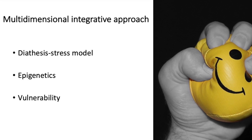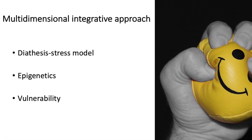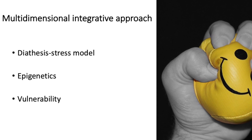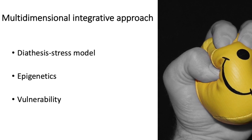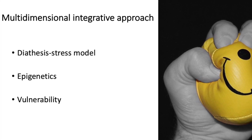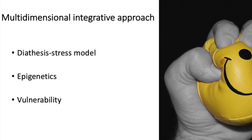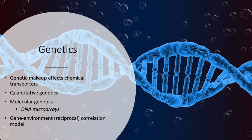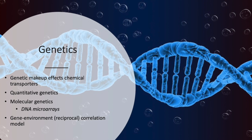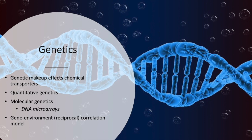This is related to the idea of epigenetics, in which people have certain predispositions that are only turned on or off depending on environmental circumstances. Additionally, genetic makeup influences chemical transporters, and thus the number of neurotransmitters that go in or out of neurons is influenced by one's genetic makeup.